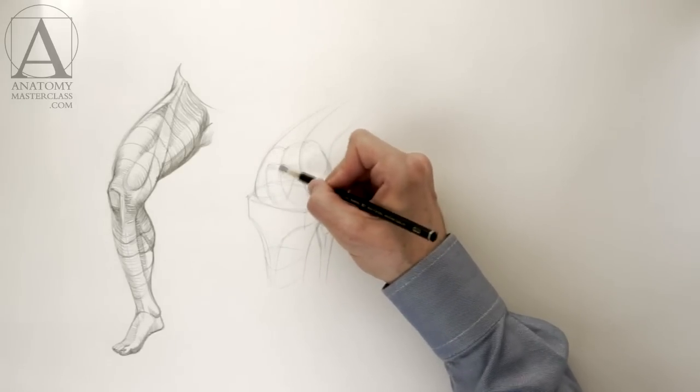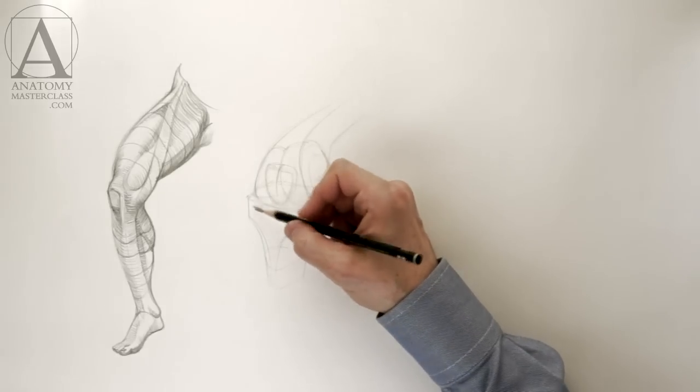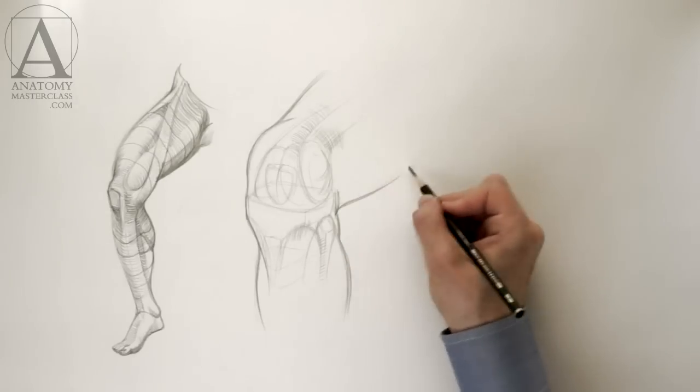The width of the leg at the knee area does not depend upon muscles, but is actually defined by the dimensions of the bones. Next time you draw a leg, don't forget about the knee anatomy.